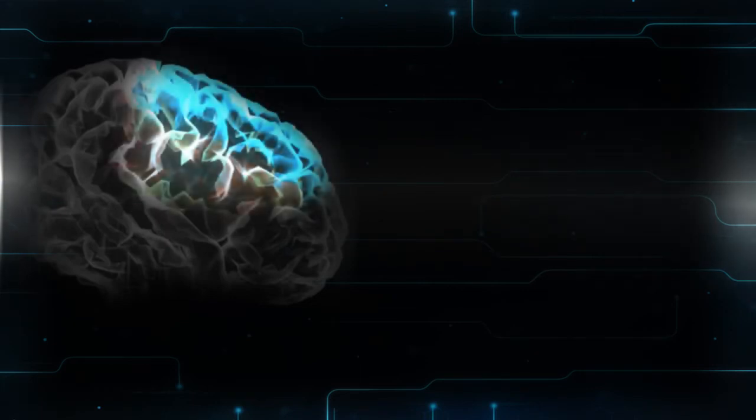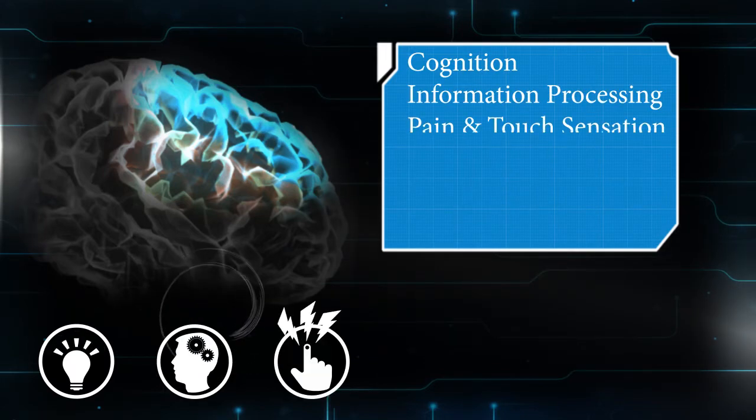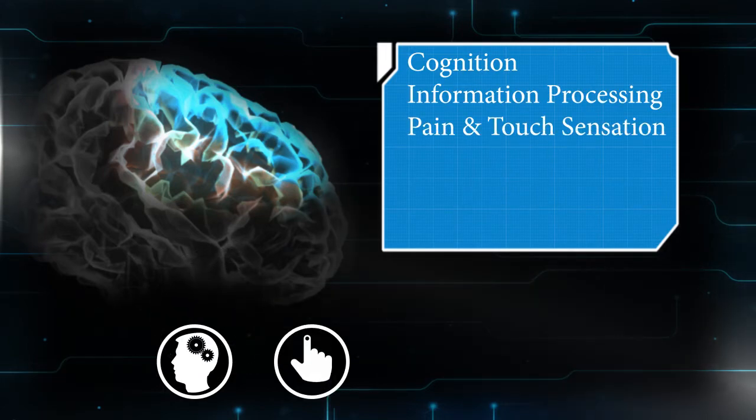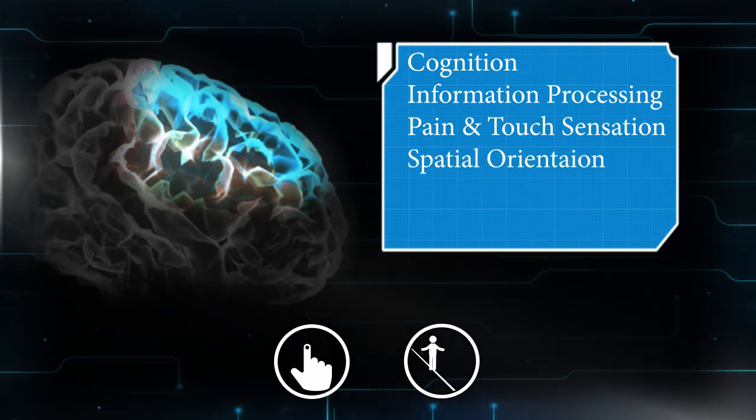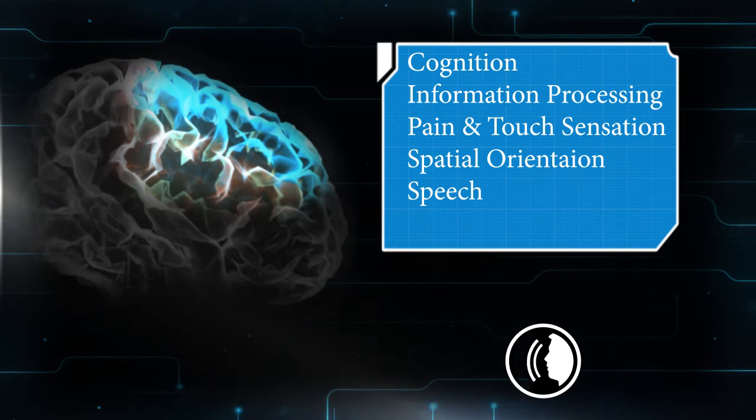The parietal lobe is located in the middle section of the brain. Its functions include cognition, information processing, pain and touch sensation, spatial orientation, speech and visual perception.